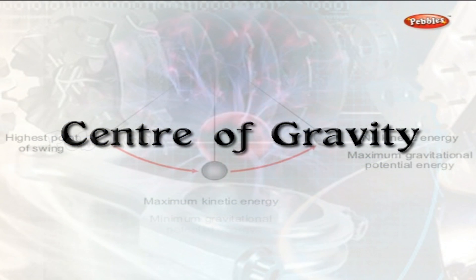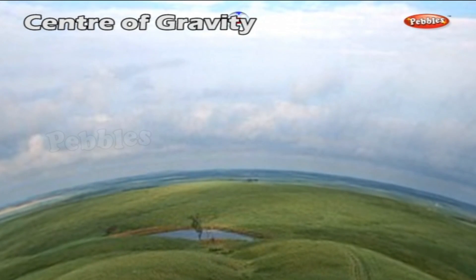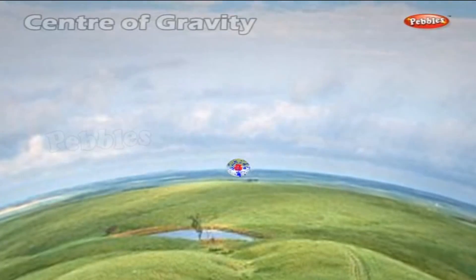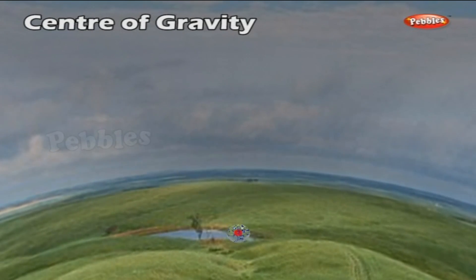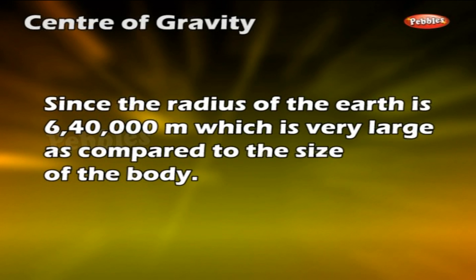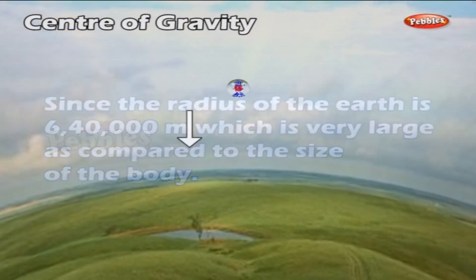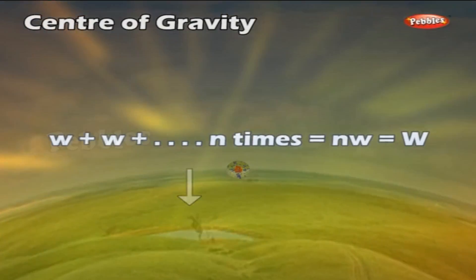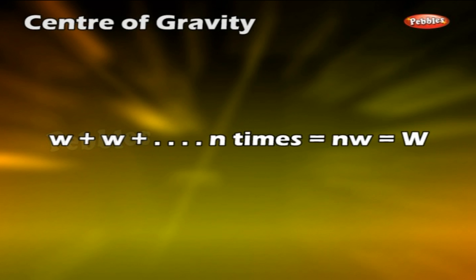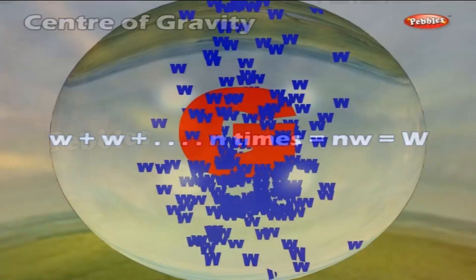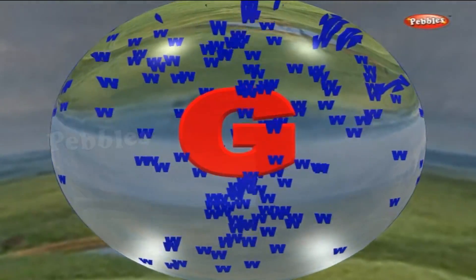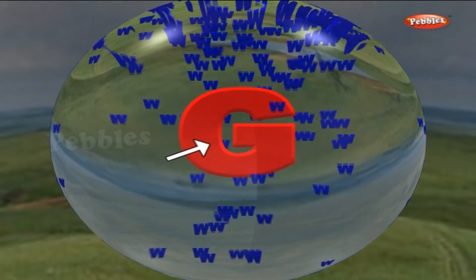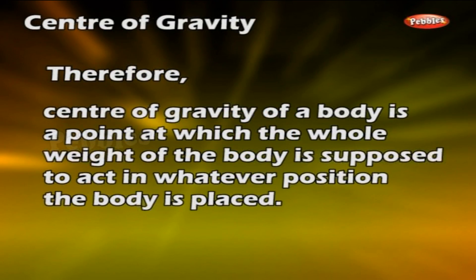Every body is made up of a very large number of particles. The earth attracts each particle by a force w, which is the weight of each particle. These forces act towards the centre of the earth. Since the radius of the earth is 6,400,000 m — very large compared to the size of the body — all the forces are parallel. The resultant is w + w + … (n times) = nw, which equals the total weight W of the body, where n is the number of particles. The weight W acts at a point G called the centre of gravity of the body.